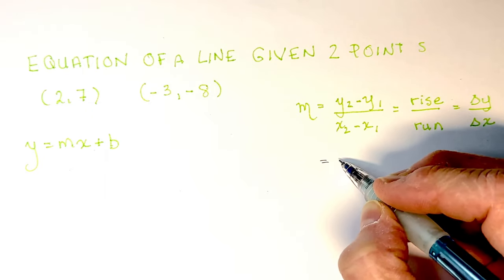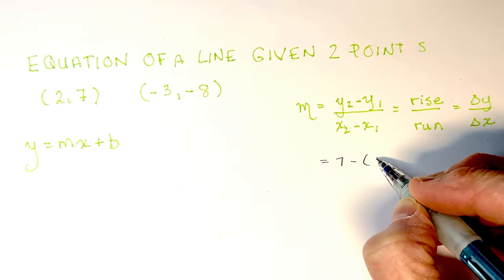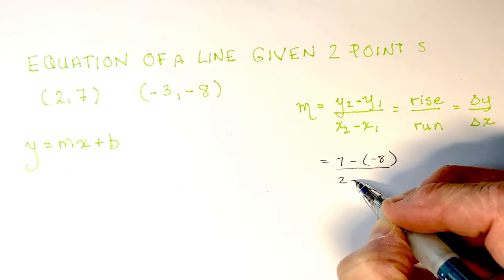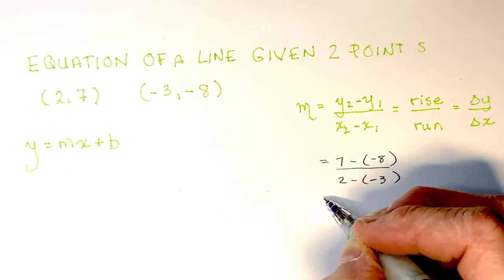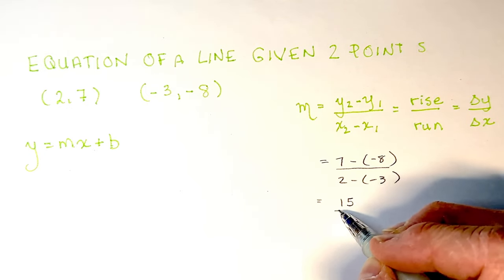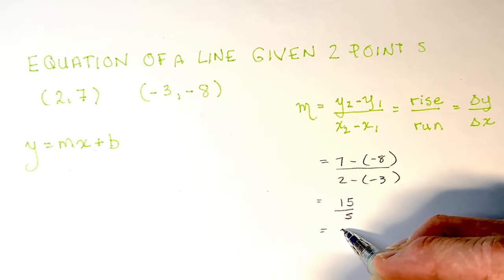y2 minus y1, so all I have to do is subtract the y's. Don't forget minus minuses here, 2 minus minus 3, and that's rise over run or delta y over delta x. I would get 15 over 5, which will give me a slope of 3.